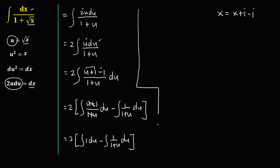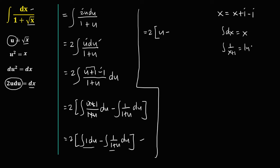Solving the integrals: the integral of 1 du equals u. For the integral of 1 over (1 plus u), since the integral of 1 over (x plus 1) equals ln of the absolute value of x plus 1, therefore the integral of 1 over (1 plus u) equals ln of the absolute value of 1 plus u, plus C.